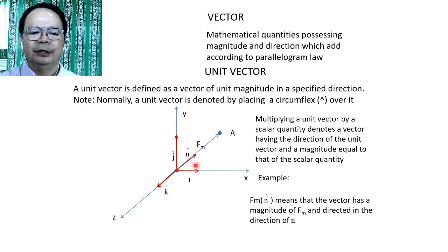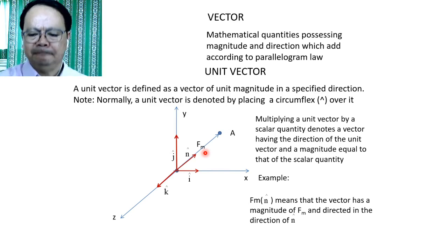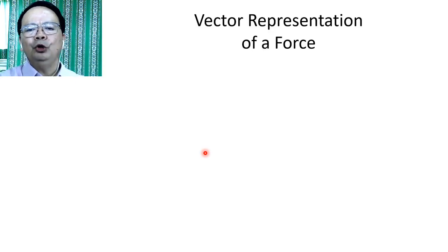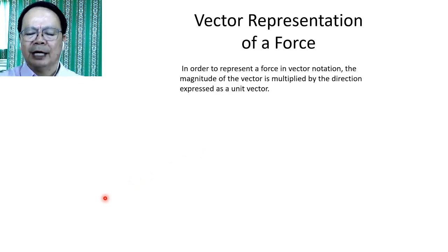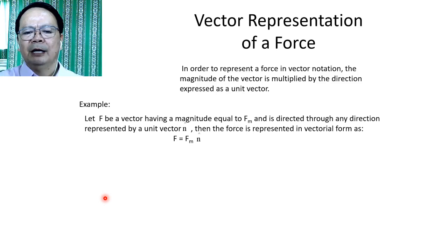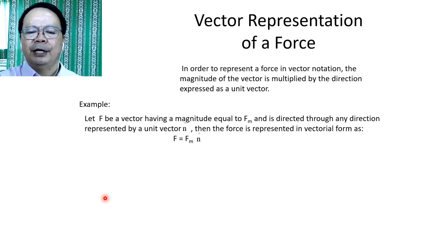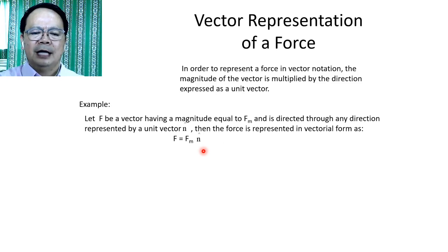How do we represent a force in vector notation or vector form? In order to represent a force in vector notation, the magnitude of the vector is multiplied by the direction expressed as a unit vector. Let F be a vector having a magnitude equal to F sub m and directed through any direction represented by a unit vector N. Then the force is represented in vectorial form as the product of F sub m multiplied by N.